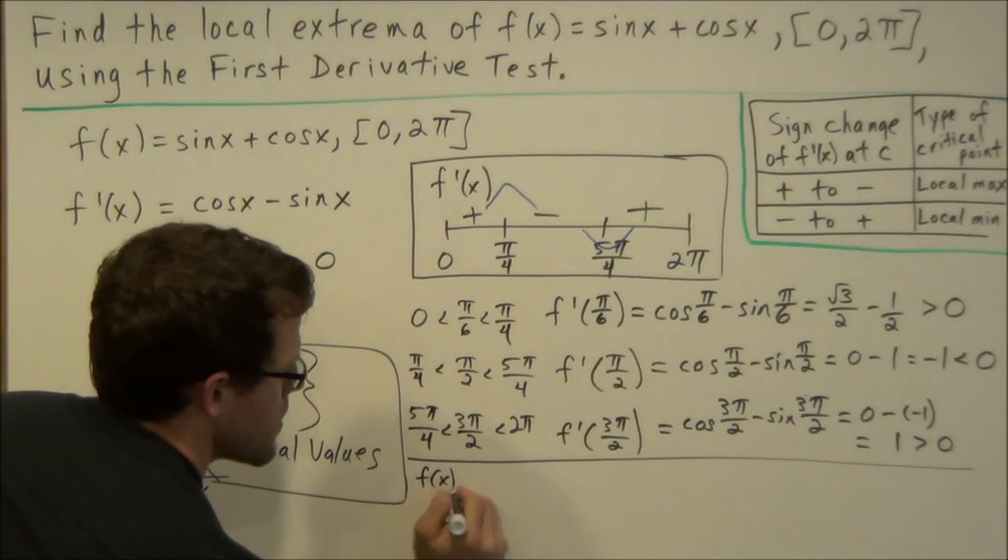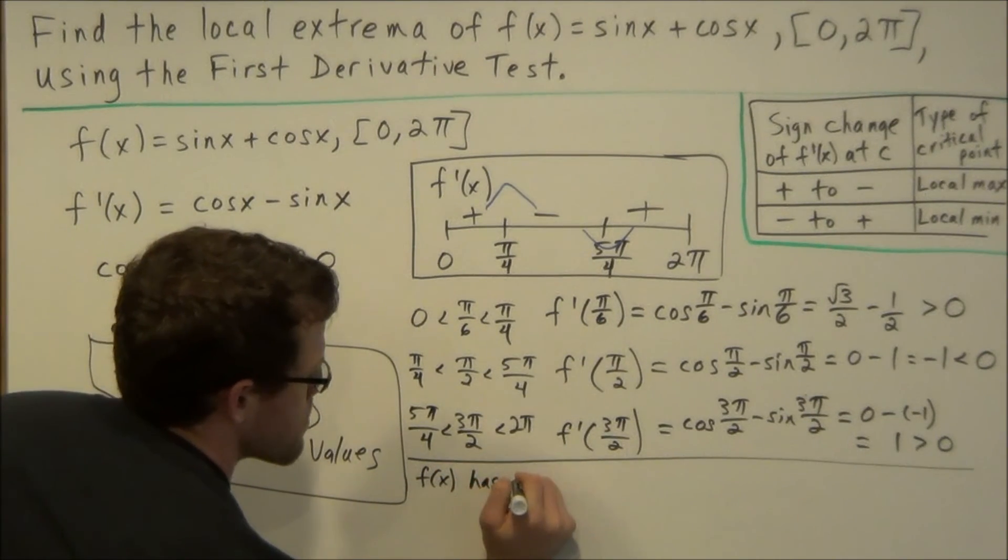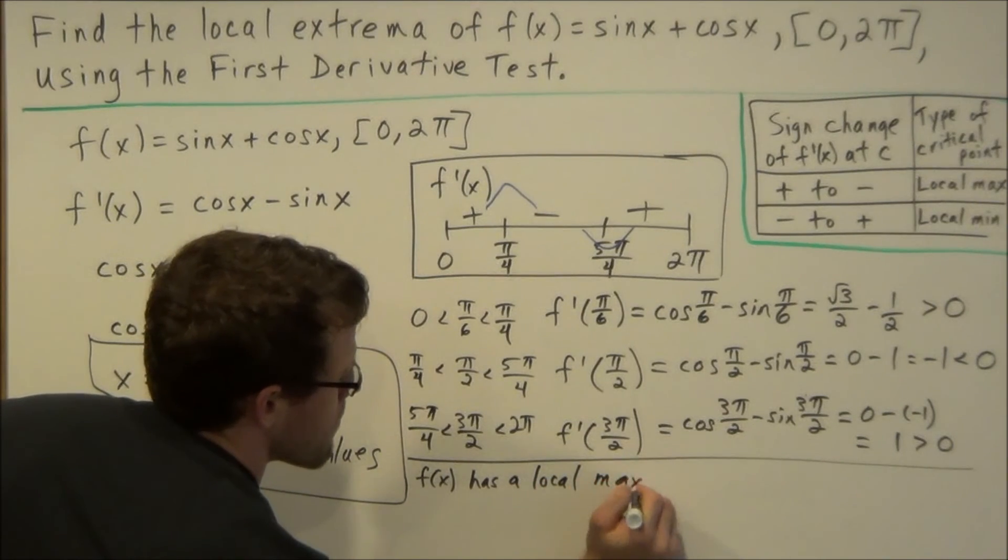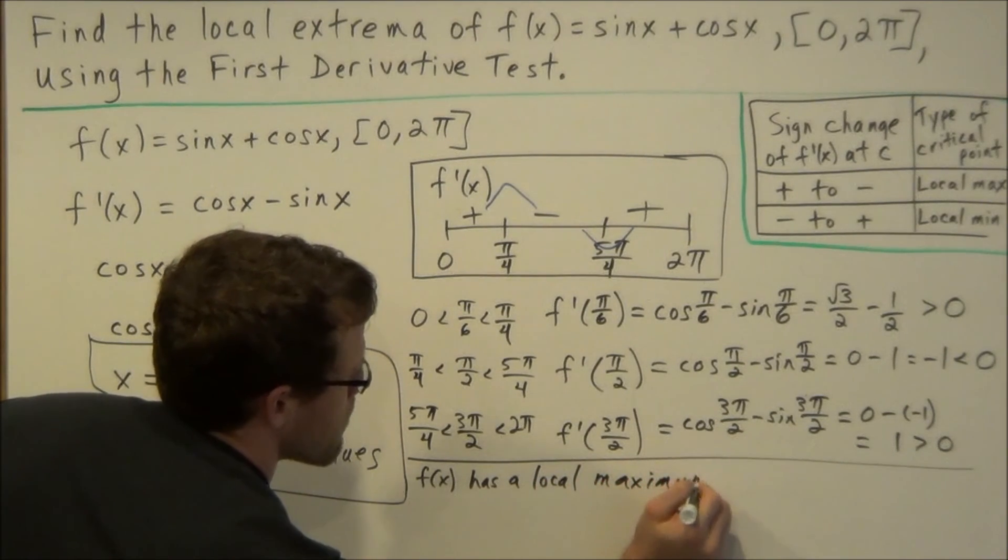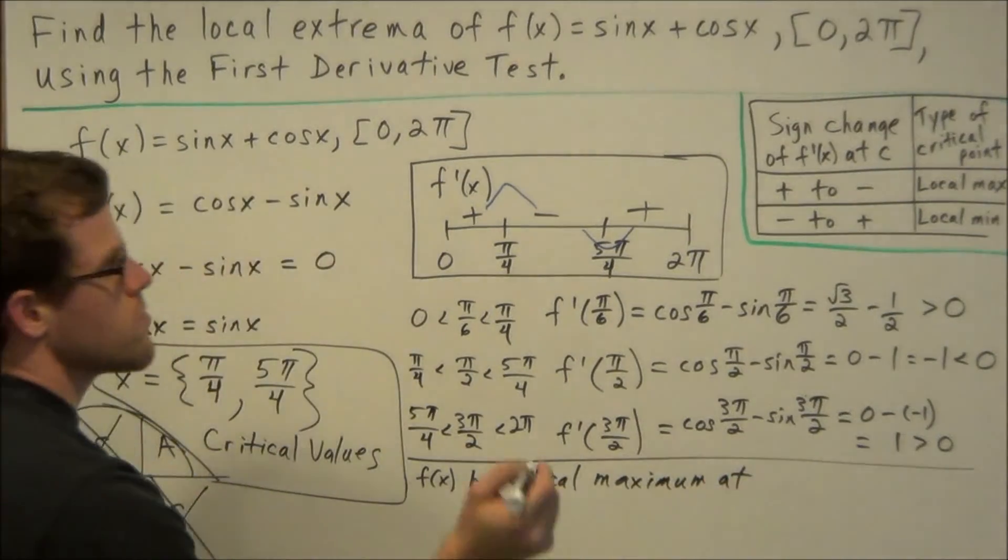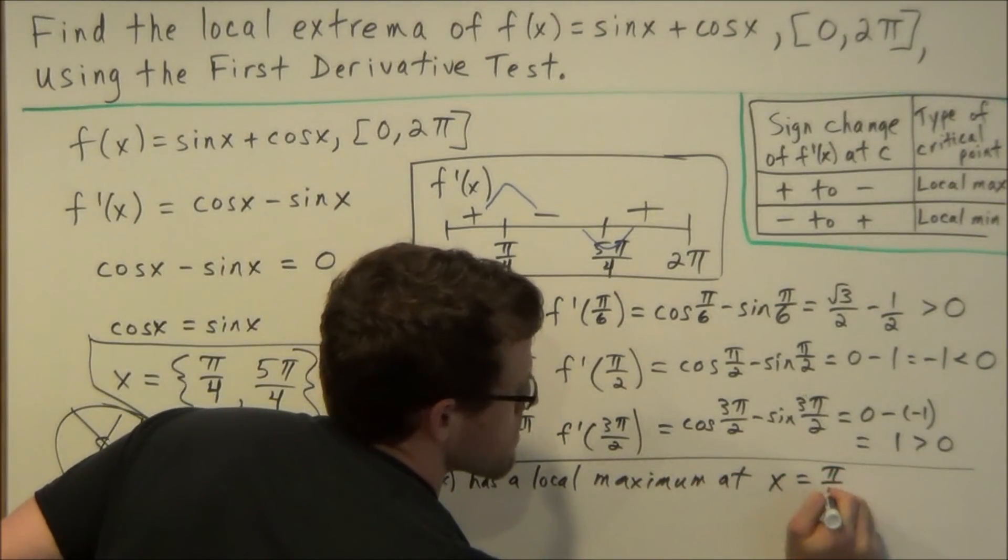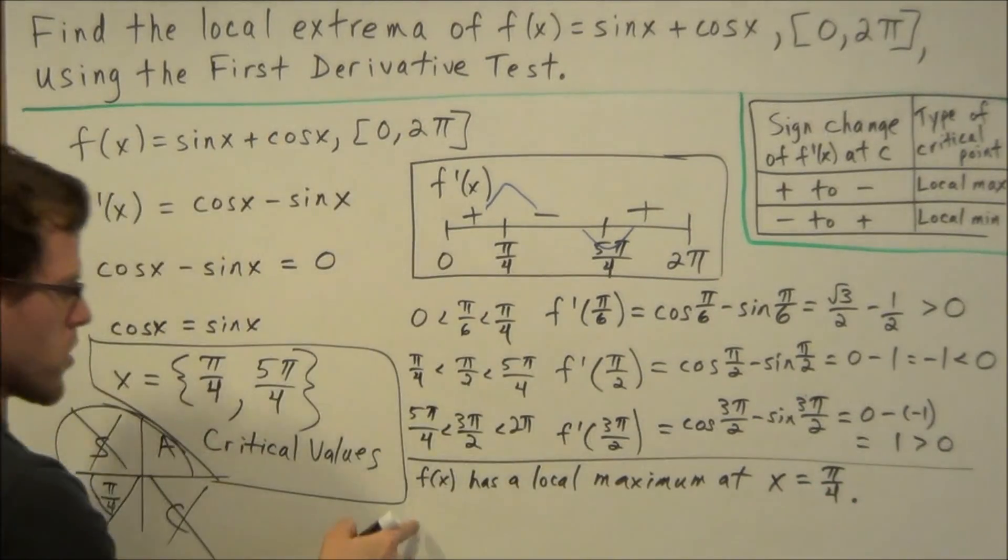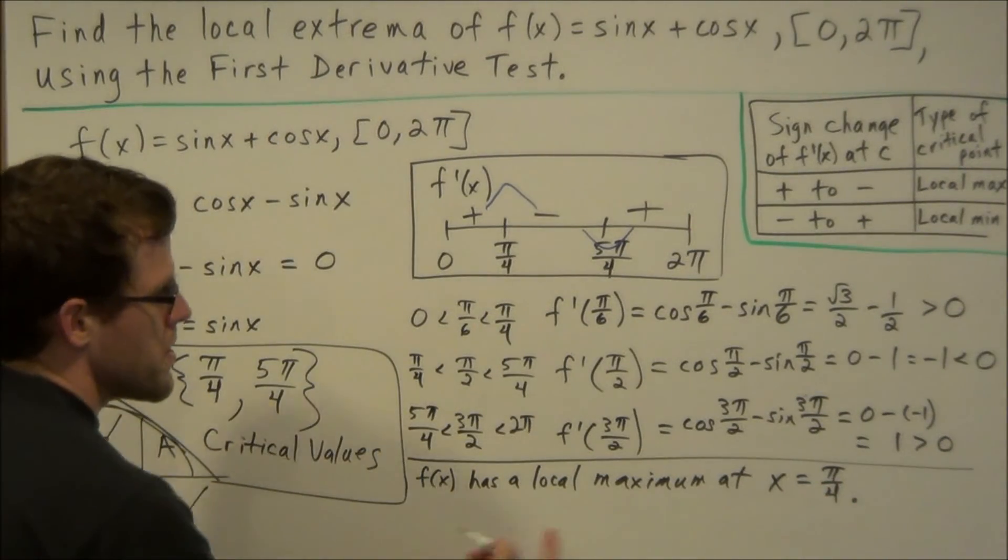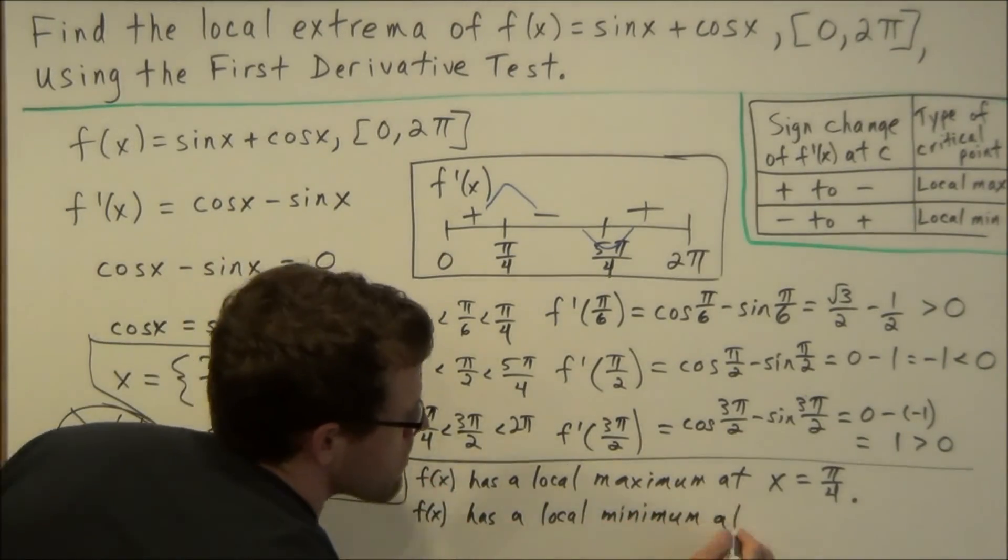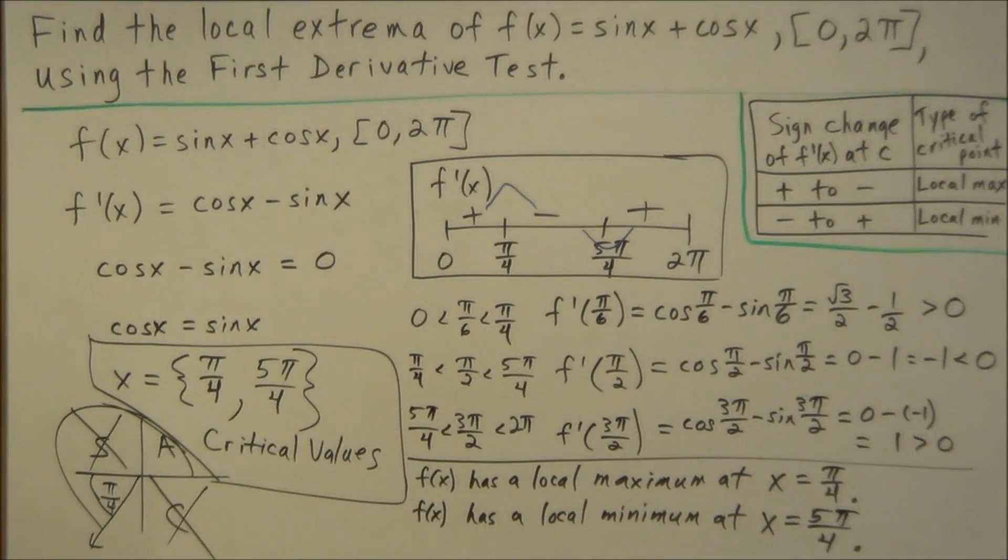So to conclude what we have here, we could say f(x) has a local maximum at x equals π/4, and we could also say f(x) has a local minimum at x equals 5π/4.